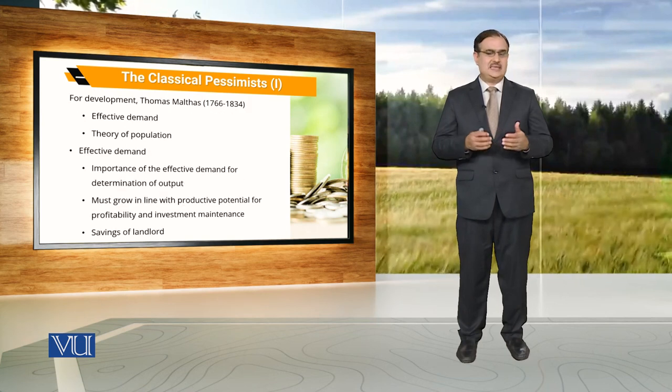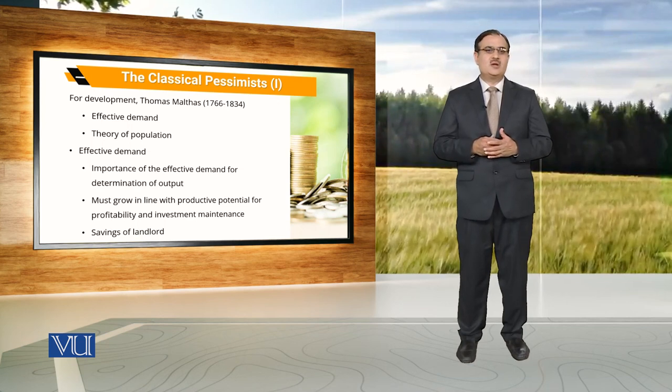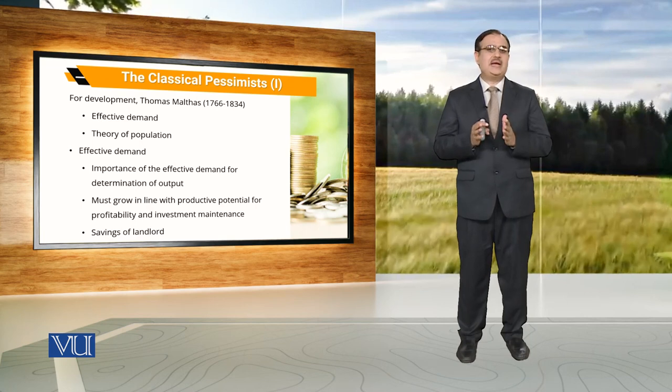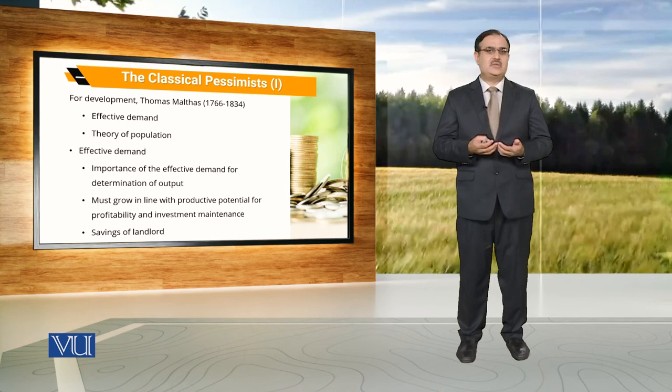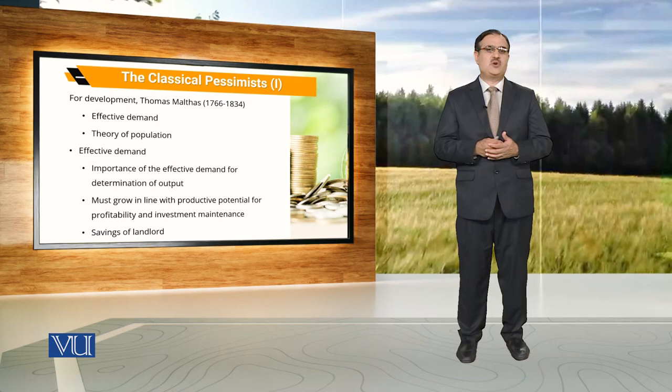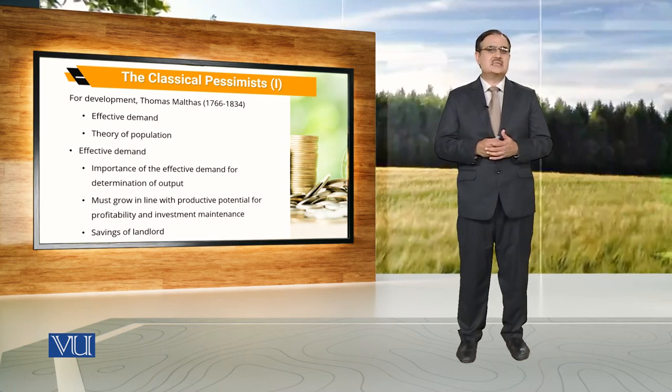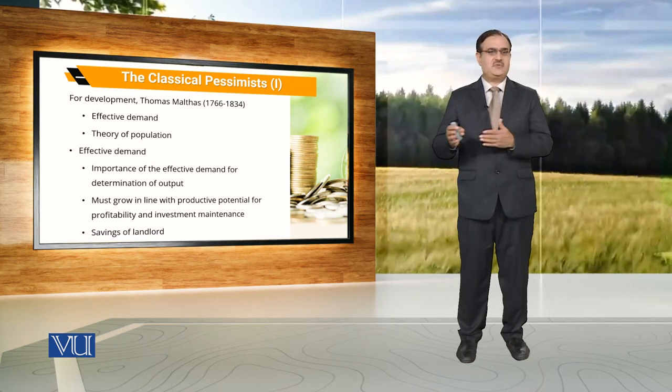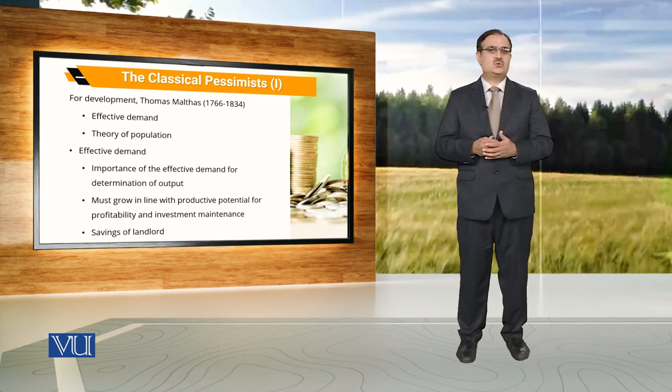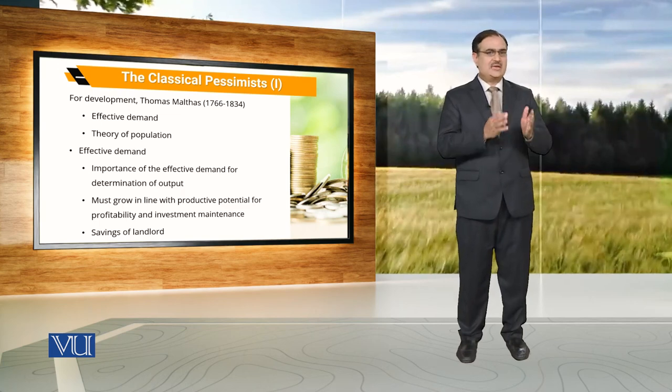When we talk about classical pessimists, Malthus is the only economist who highlighted the role of effective demand. It is effective demand that plays an important role in the determination of output — it is demand that determines the level of output. Other classical economists refer only to Say's Law, that supply creates its own demand. But for Malthus, effective demand should be in line with the productive potential for profitability and investment maintenance.